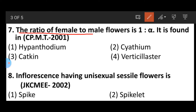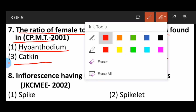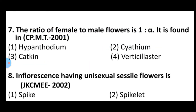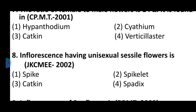Question number seven: The ratio of female to male flowers is 1:2. This is found in — option one: hypanthodium inflorescence, option two: spatium, option three: cyathium, option four: verticillaster. The correct answer is spatium, a typical type of inflorescence where the ratio of female to male flowers is 1:2.